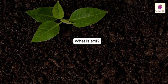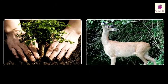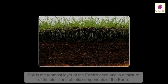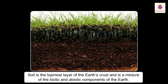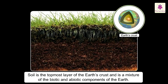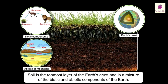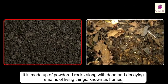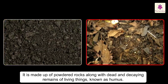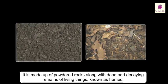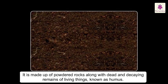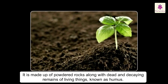What is Soil? Soil as a natural resource plays a very important role in sustaining life on earth. Soil is the topmost layer of the earth's crust and is a mixture of the biotic and abiotic components of the earth. It is made up of powdered rocks along with dead and decaying remains of living things known as humus. The humus gets mixed up with the top layer of the soil making it fertile in the process.